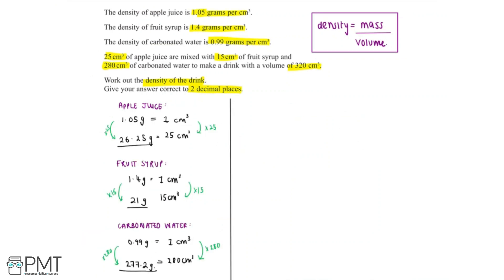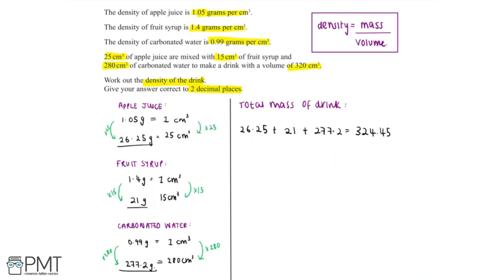Now that we've found the mass of the apple juice, the mass of the fruit syrup, and the mass of the carbonated water, we can find the total mass of the drink. The total mass is 26.25 plus 21 plus 277.2, which gives us an answer of 324.45 grams.